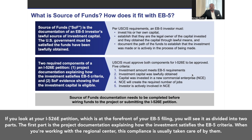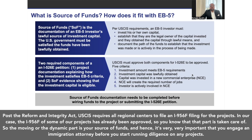If you look at your I-526 petition, which is at the forefront of your EB5 filing, you will see it is divided into two parts. The first part is the project documentation explaining how the investment satisfies the EB5 criteria. When you're working with a regional center, this compliance is usually taken care of by them. Post the Reform and Integrity Act, USCIS requires all regional centers to file an I-956F filing for the projects. In our case, the I-956F for some of our projects has already been approved.